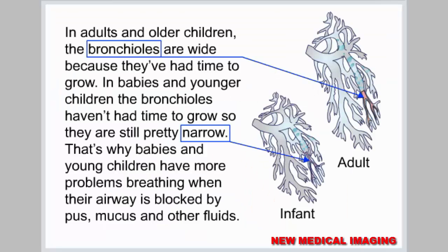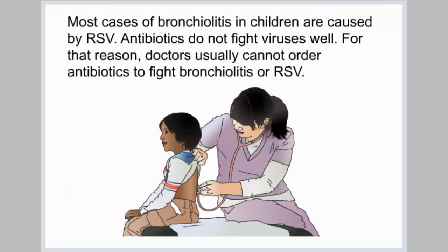In adults and older children, the bronchioles are wide because they've had time to grow. In babies and younger children, the bronchioles haven't had time to grow, so they are still pretty narrow. That's why babies and young children have more problems breathing when their airway is blocked by pus, mucus, and other fluids. Most cases of bronchiolitis in children are caused by RSV. Antibiotics do not fight viruses well, so doctors usually cannot order antibiotics to fight bronchiolitis or RSV.